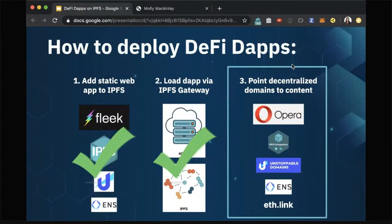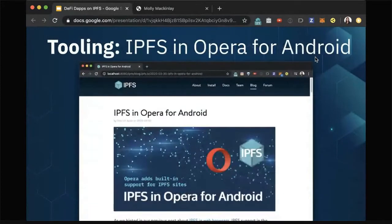Now we've added our static front end to IPFS and we're able to load it via an HTTP or local IPFS gateway. Now we want to point something semi-human readable and resolve links to IPFS in a decentralized way. Most notably, about a month ago Opera for Android added default built-in support for IPFS, so you can directly reference IPFS colon slash slash or IPNS links directly in the Opera browser. That's an awesome first step in having built-in support in the browsers everyone is using for resolving content in Web3 in a decentralized way.